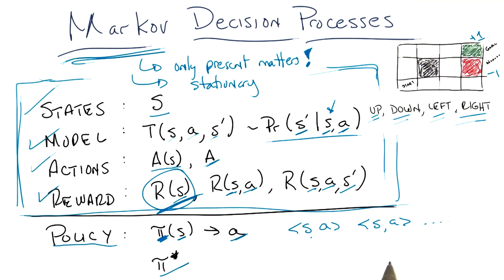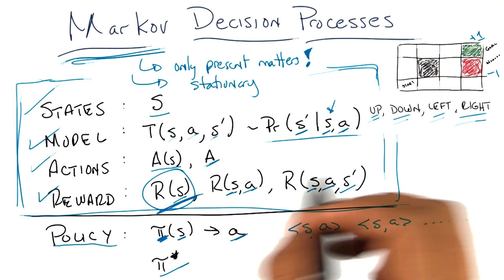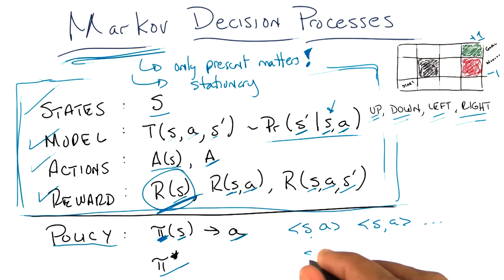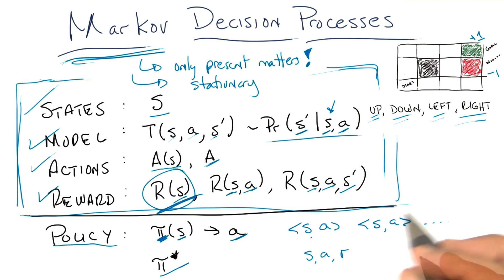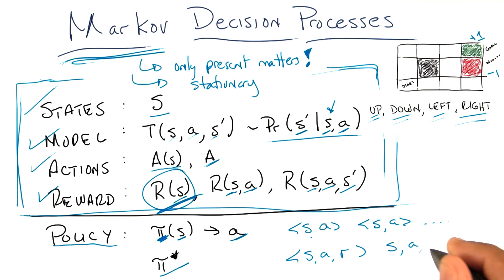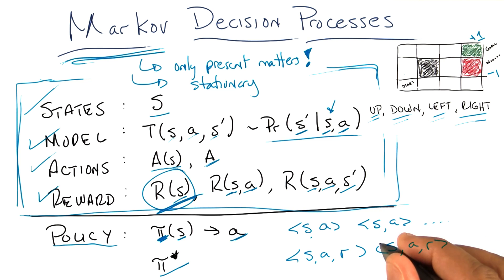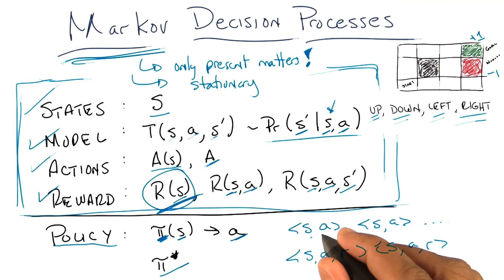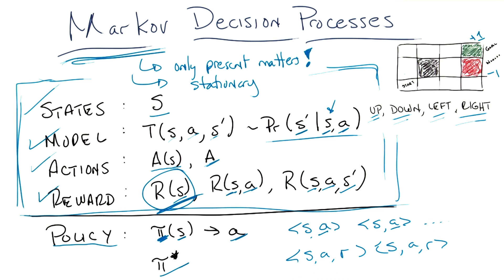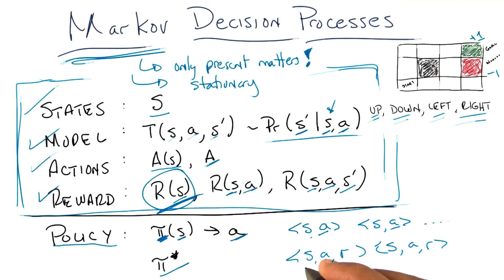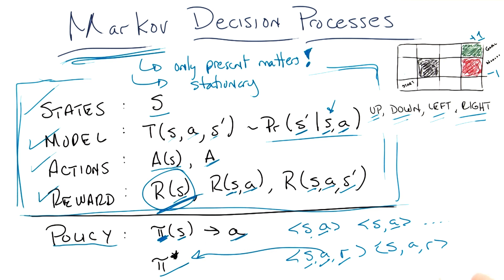But what we actually see in the reinforcement learning world, in the Markov decision process world, is we see states, actions, and then the rewards that we received. So in fact, this problem of seeing a sequence of states, actions, and rewards is very different from the problem of being told this is the correct action to take. Instead, we say: if you're in a state and you take this action, this is the reward that you would see — and from that, we need to find the optimal action.